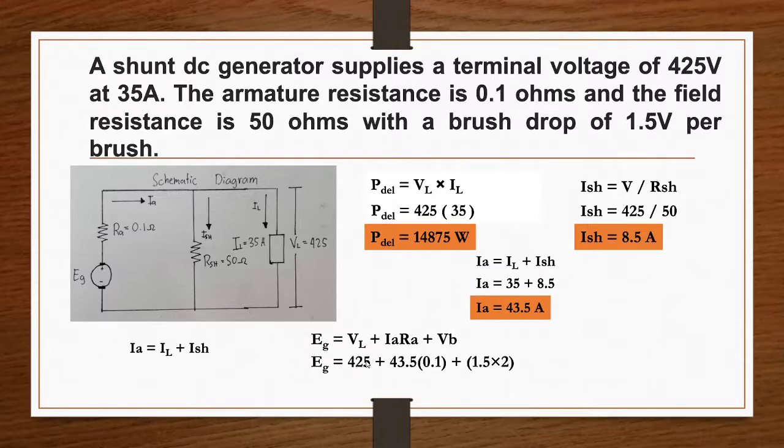So 425, our load voltage, plus 43.5, our armature current, times our armature resistance which is 0.1.